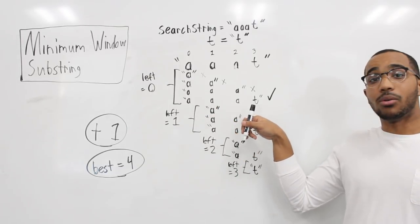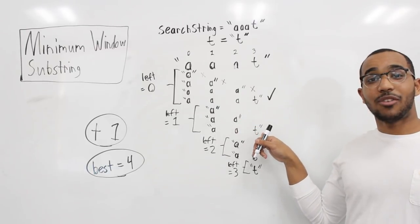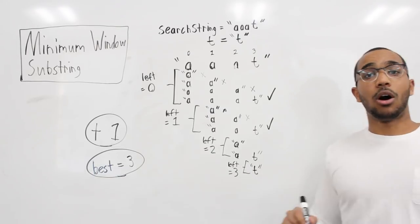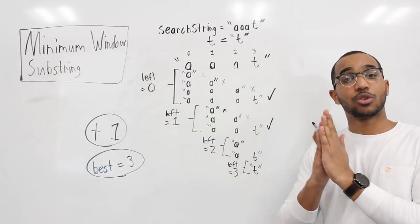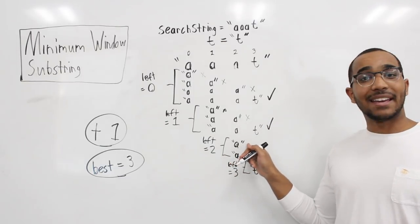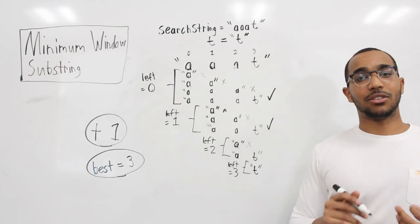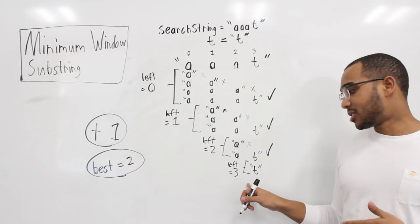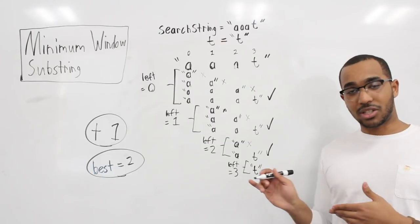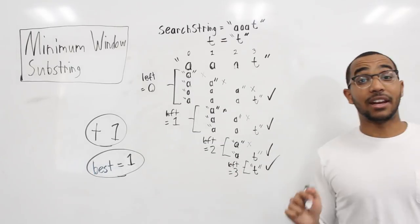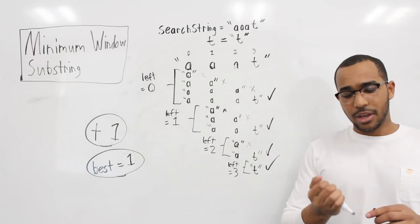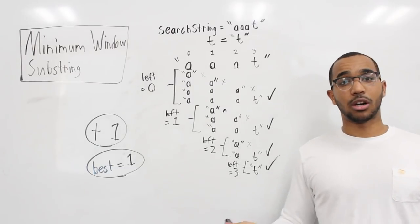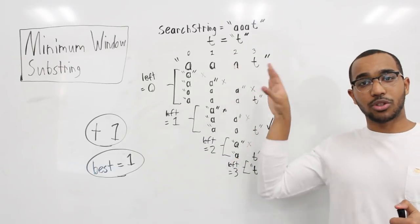Continuing: next window — no. The one after — no. Then yes, satisfies with length three — that beats our best, so we update. Moving left to index two, exploring all right windows: one window doesn't satisfy, the next does with length two — update best. Then with left at three, the single window satisfies with length one, beating our best again. In the actual code, you'd keep the left and right boundaries so you can chop a substring and return it. That's the brute force approach.